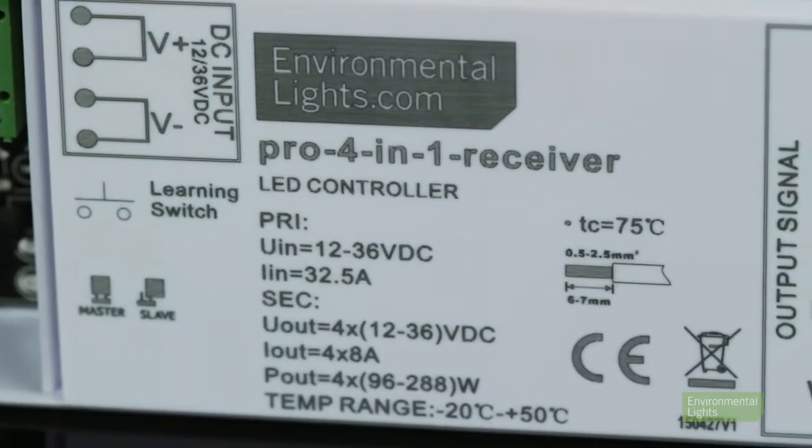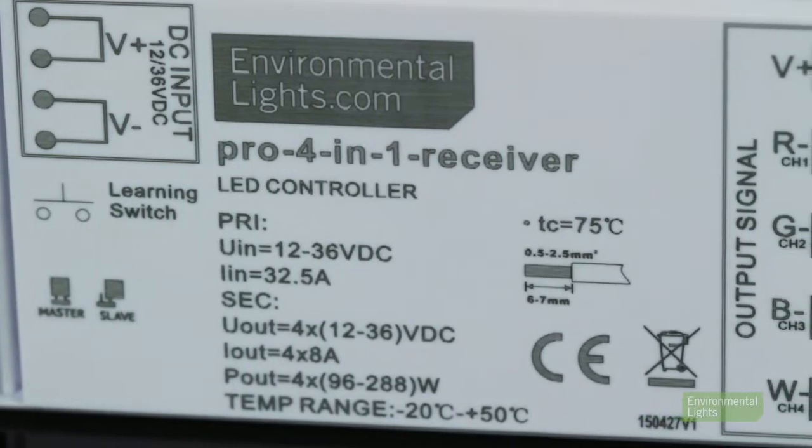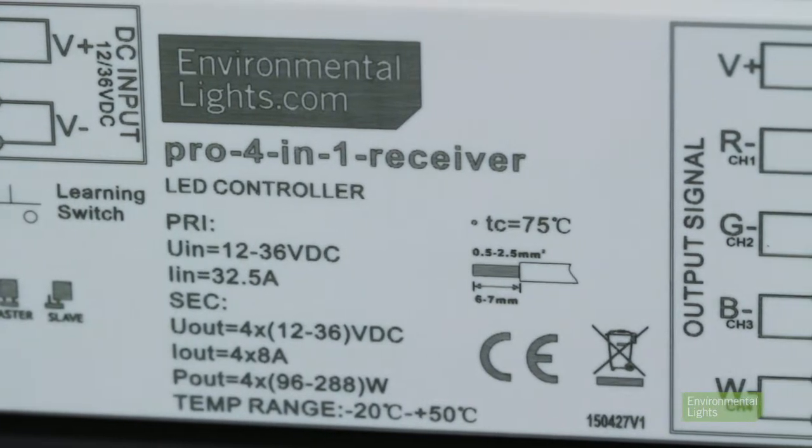The LED Pro 4-in-1 receiver features four output channels that each support eight amps of current for up to 384 or 768 watts of LED lighting at 12 or 24 volts respectively.